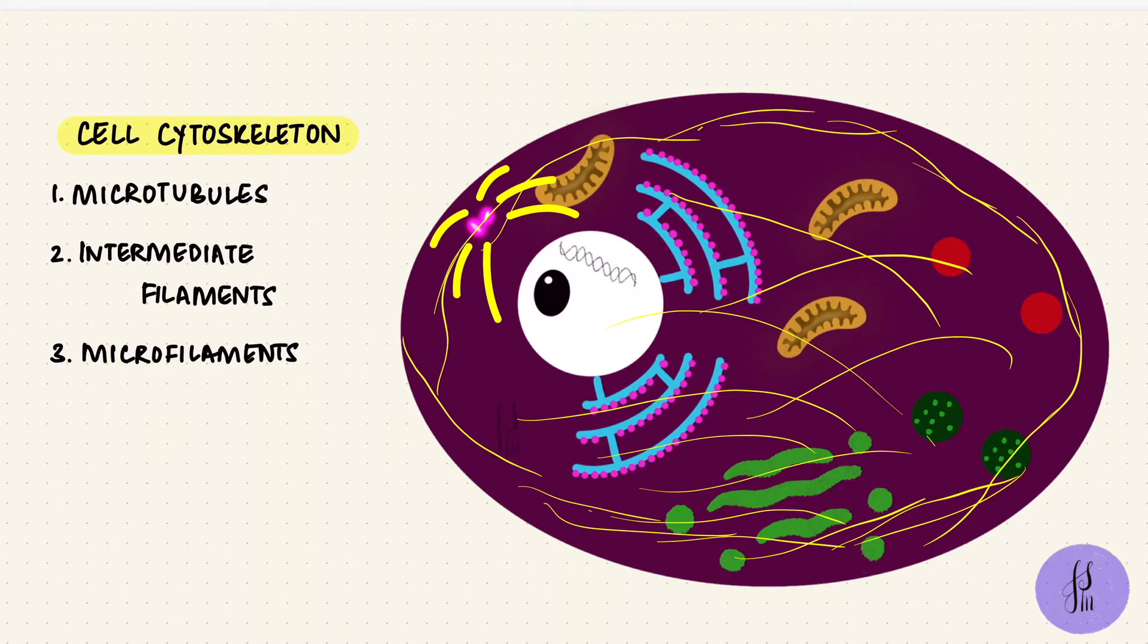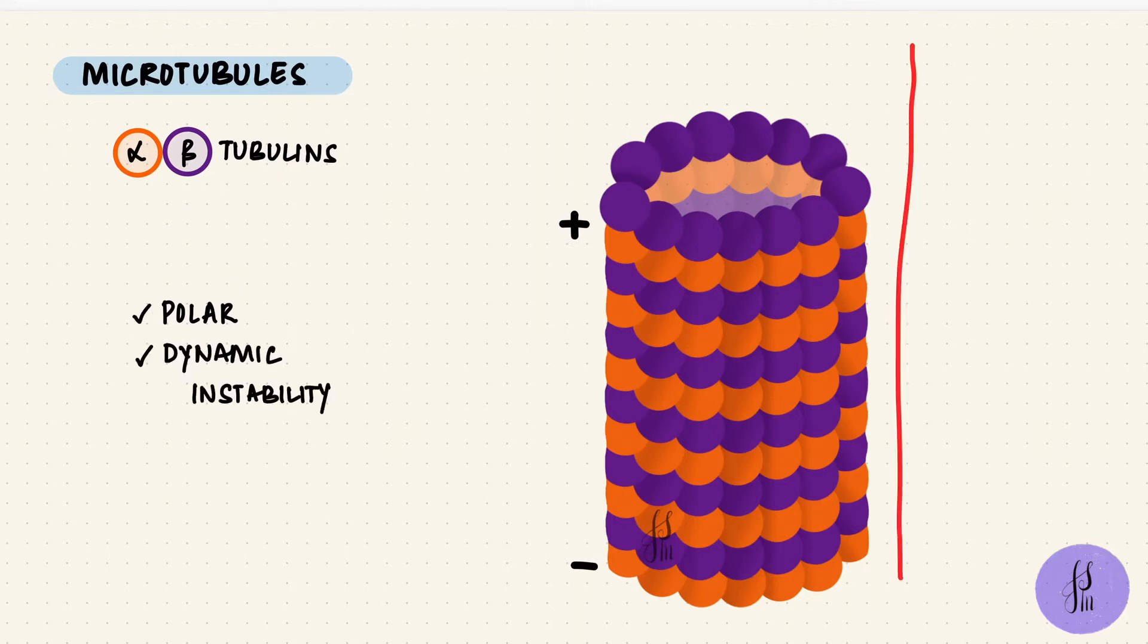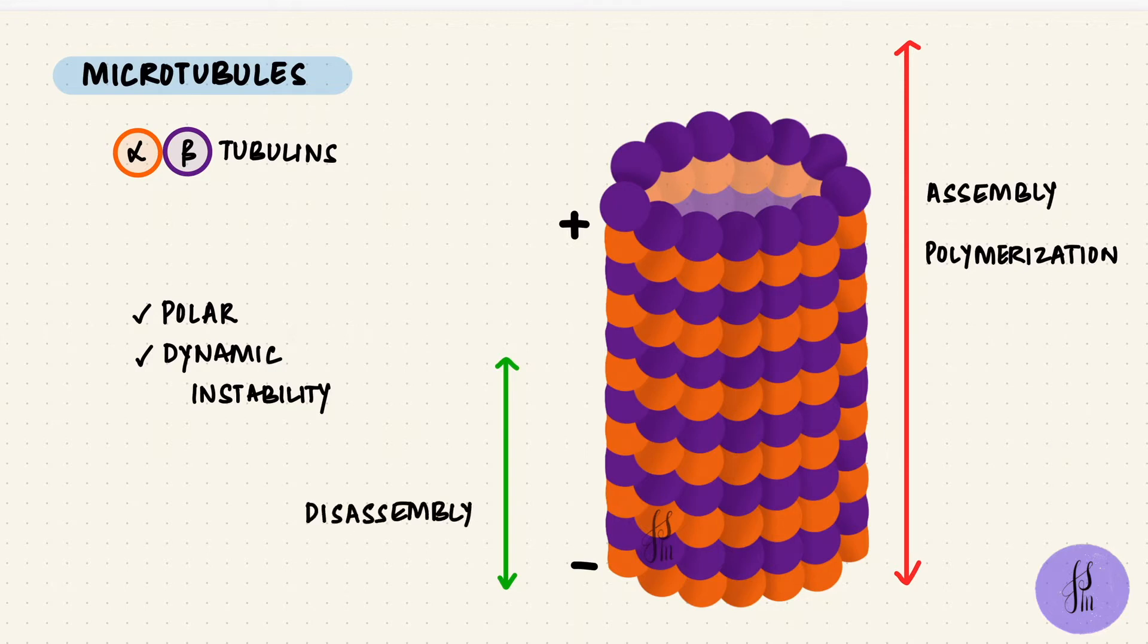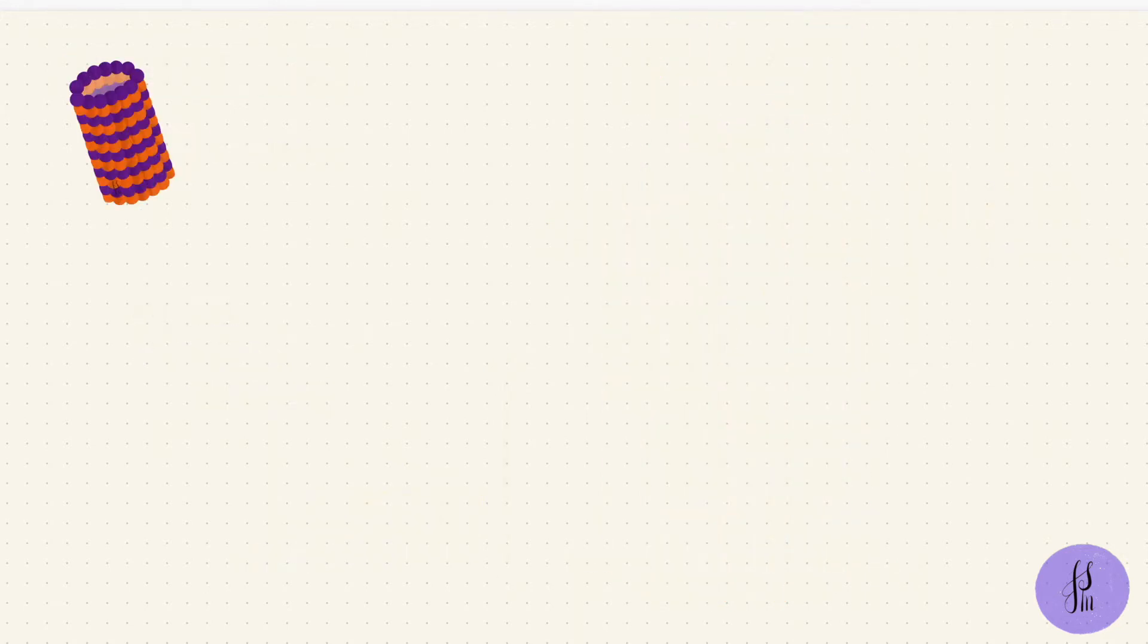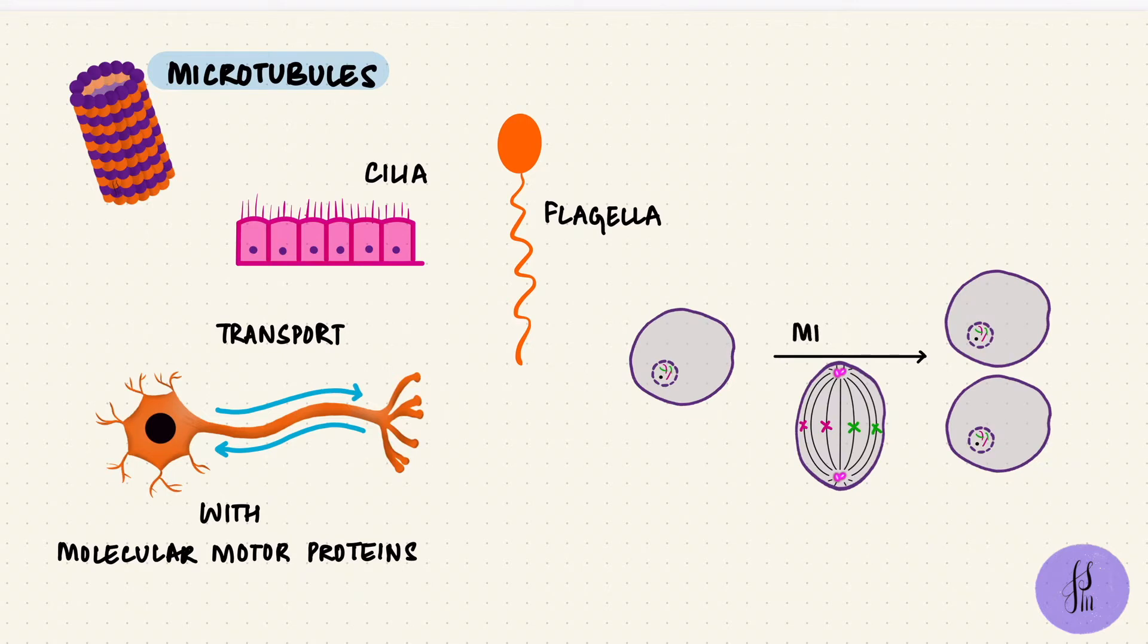In part 1 I went over microtubules, and I find a good way to learn about microfilaments is to compare them to microtubules. So what do we need to know about microtubules? They are heterodimers with alpha and beta tubulins. They are polarized with a plus end and a minus end. They are dynamically unstable, so they can assemble and disassemble by polymerizing and depolymerizing, which happens more at the plus end than at the minus end. This process involves GTP. They form a part of cilia and flagella. They help with the transport of organelles inside the cell by using molecular motor proteins like kinesin and dynein. They also form the spindle fibers during cell division.